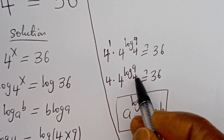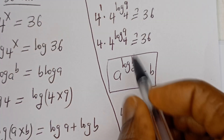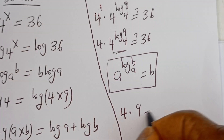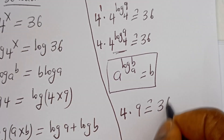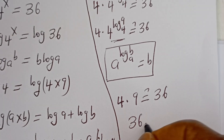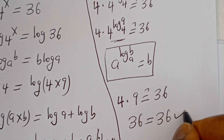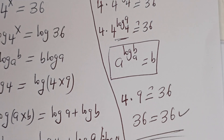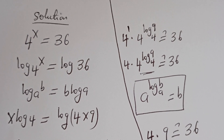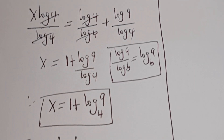So this is 4 multiplied by 9, which gives 36 is equal to 36 — which is true. I hope you enjoyed the video. Thank you for watching. Please don't forget to like, share, comment, and subscribe to my channel. Bye!